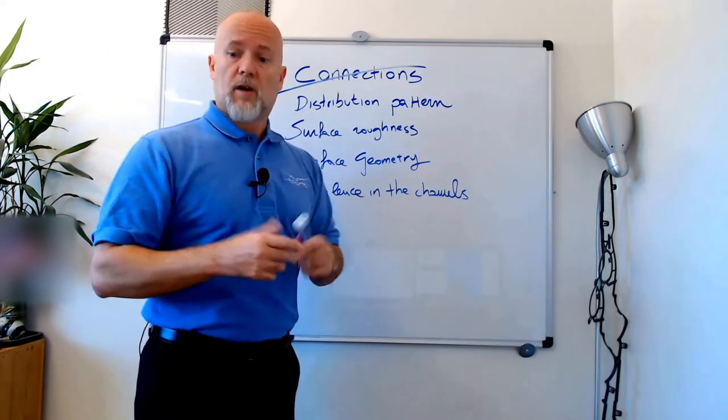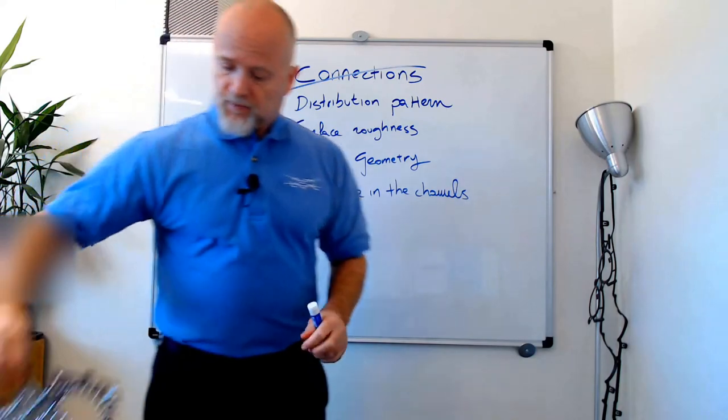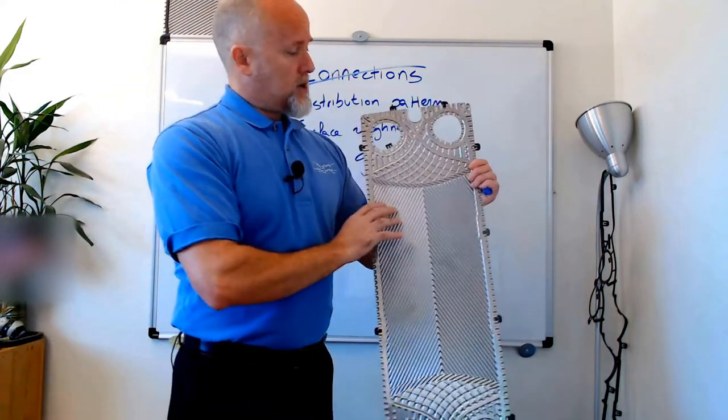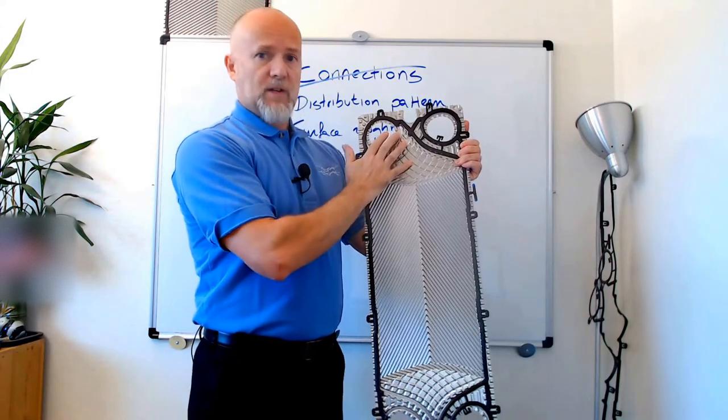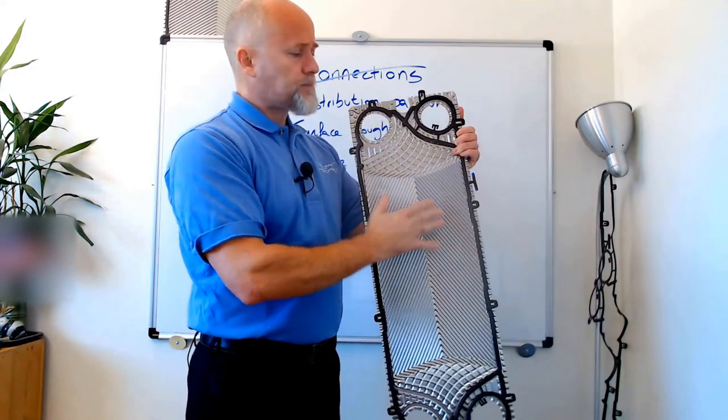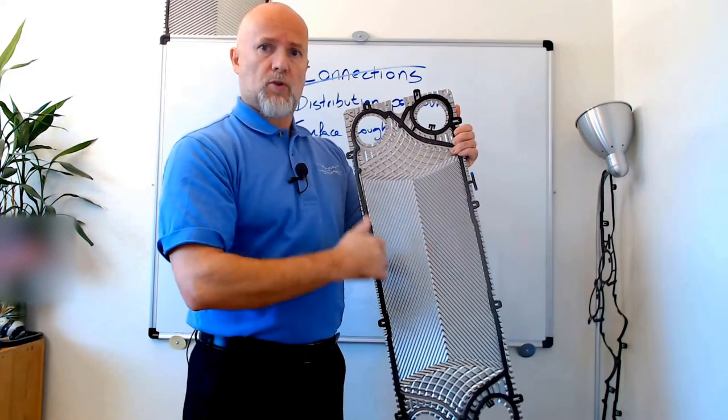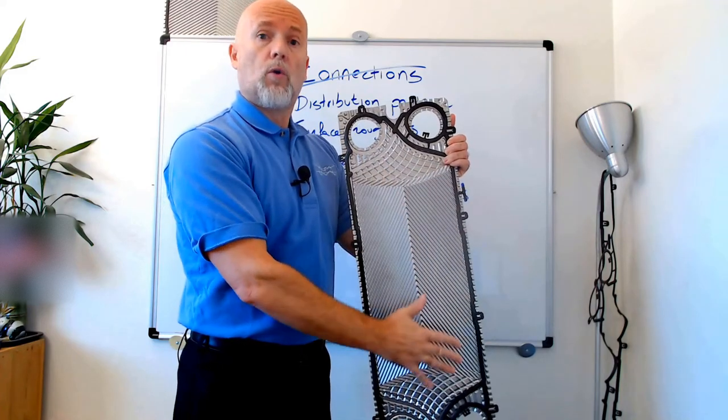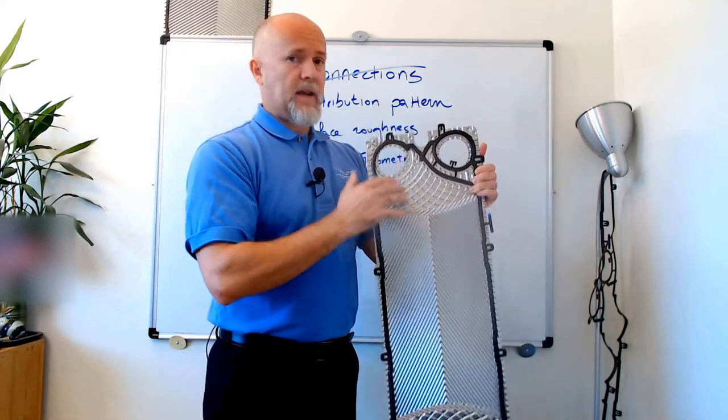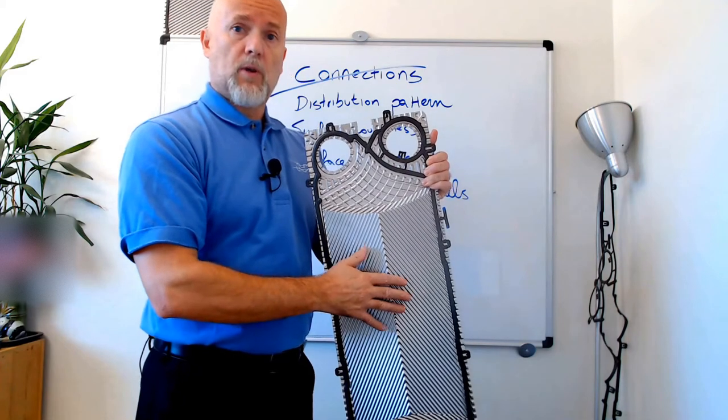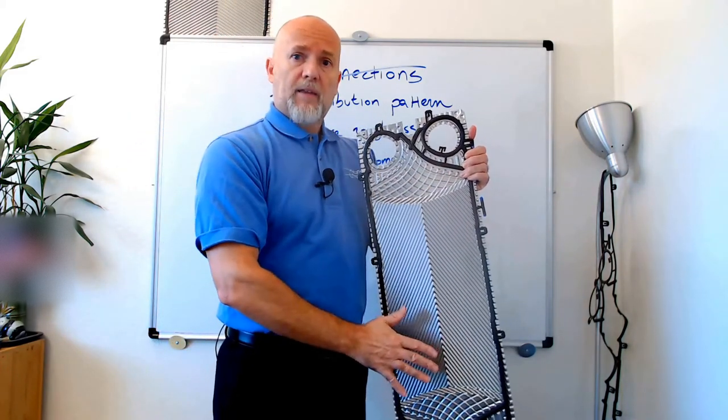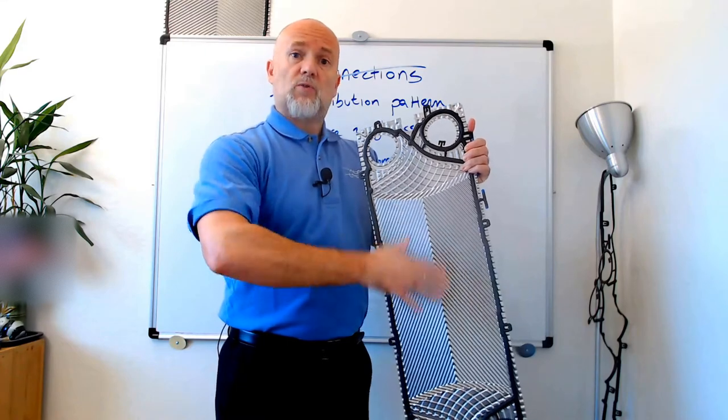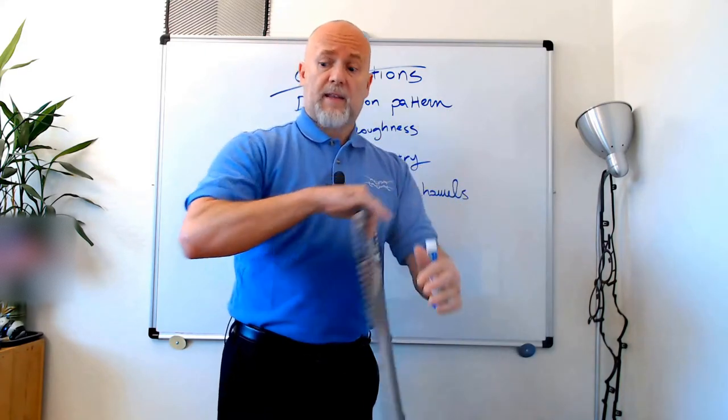You want a modern design of the plates like this one with the gaskets, which facilitates equal distribution and even distribution because you want to cover all the plate. You want a plate that is as smooth as possible so you don't have pressure drop just going through the plate, but you have pressure drop because you increase the turbulence and the shear stress.